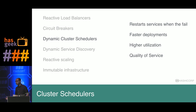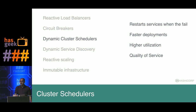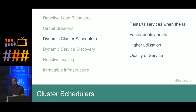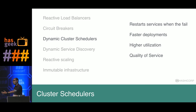Use a dynamic cluster scheduler like Nomad, Kubernetes, or Mesos to restart services when they fail, enable faster deployments, and better resource utilization and QoS. We recently ran a test on Nomad where we ran a million containers in under five minutes on Google Compute — that's the speed we're talking about. Instead of traditional configuration management systems, cluster schedulers dramatically improve the speed at which you can deploy or roll back.